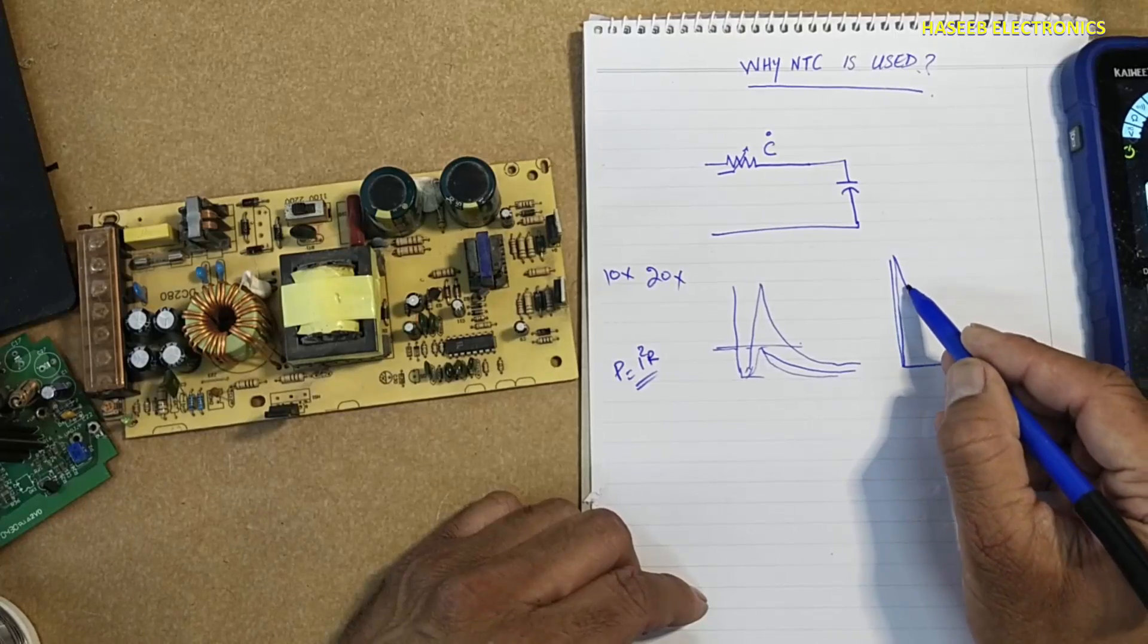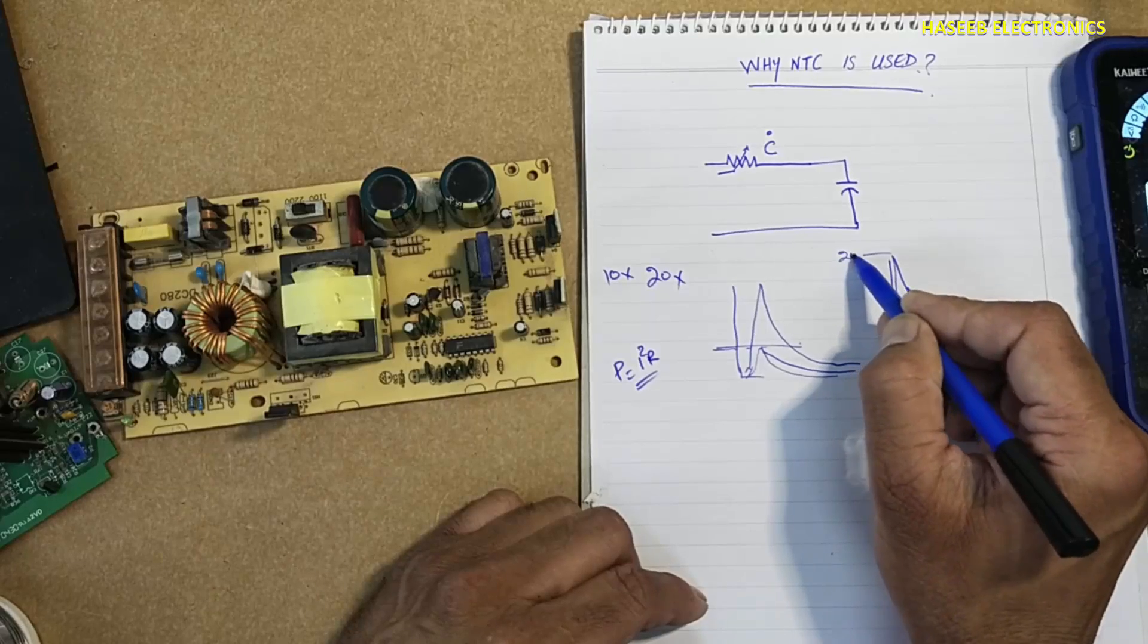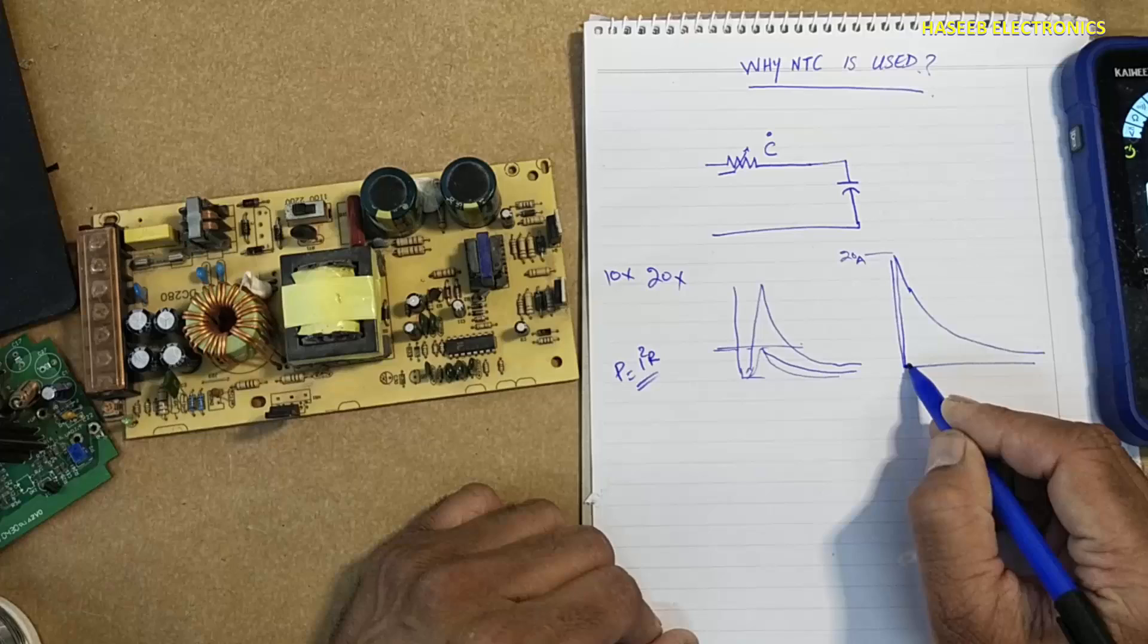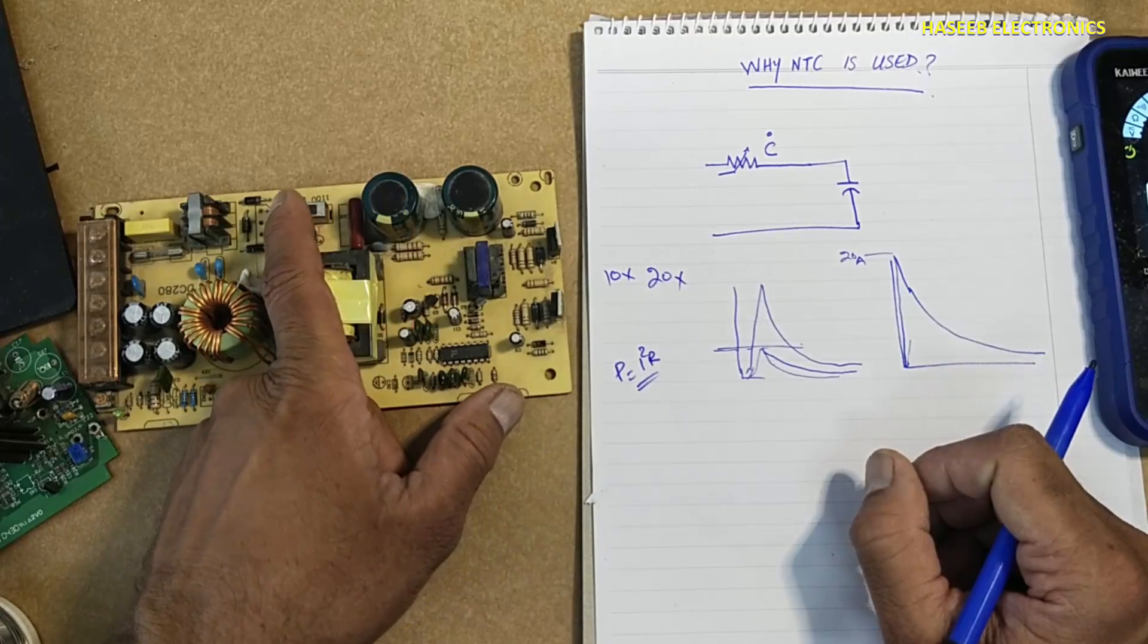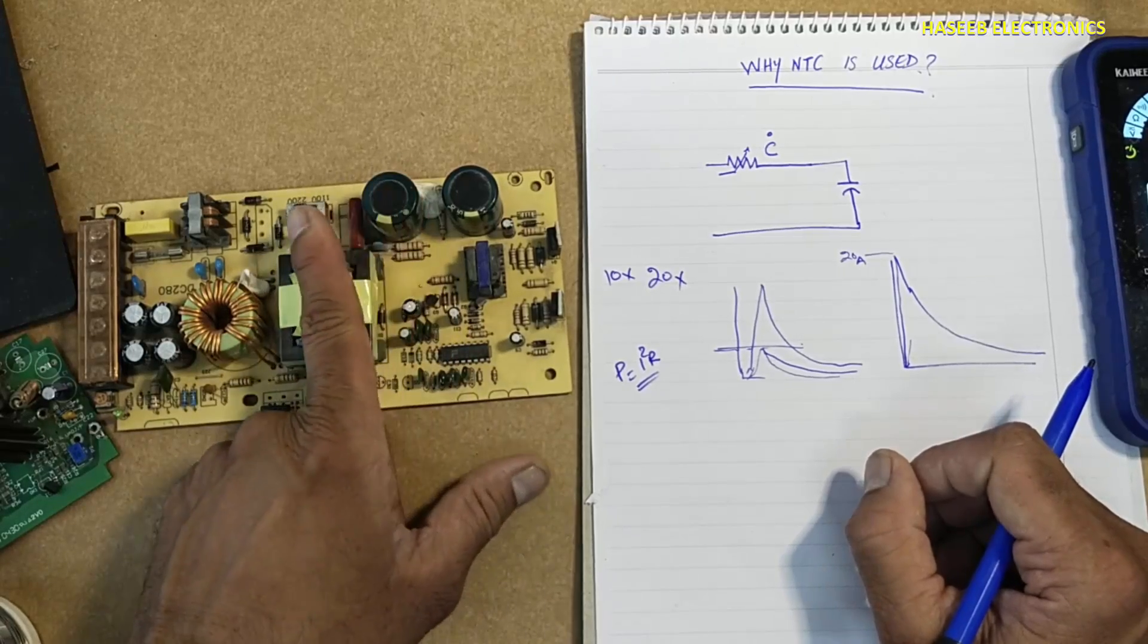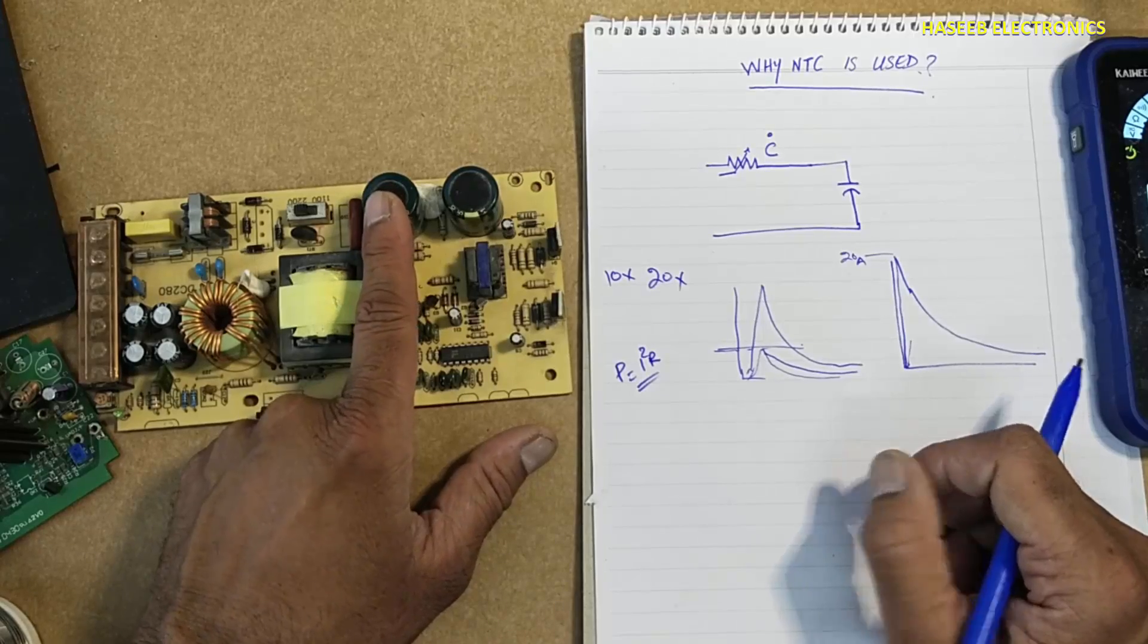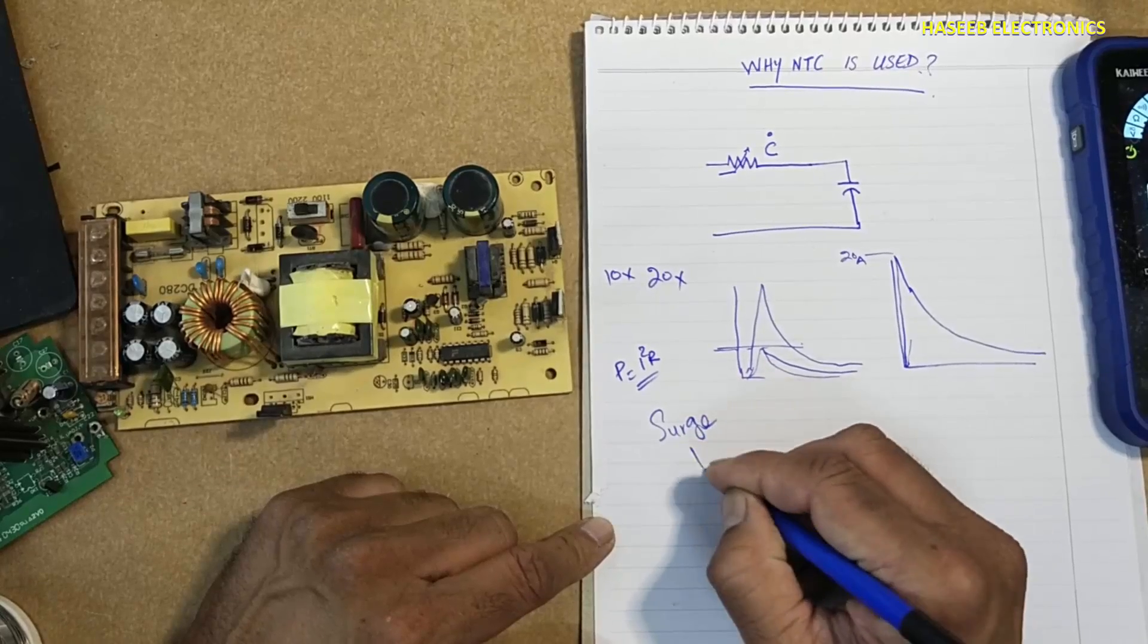I can say it needs 20 ampere. When NTC thermistor is connected, at that time it will produce resistance. When it produces resistance, it will become load in series of these capacitors, so it will protect the circuit from over current. That is called surge current or inrush current.